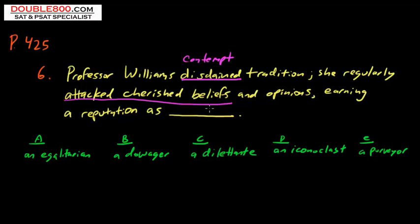So we know she disliked tradition and she went against the grain, attacking or reviling these treasured traditions or beliefs. So what type of reputation? You could try to predict that it's some type of word, a reputation as a counter establishment. You're not going to see counter establishment as a choice, but it'll help you predict when you want a person who goes against the grain.